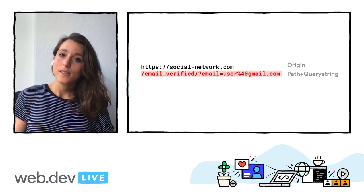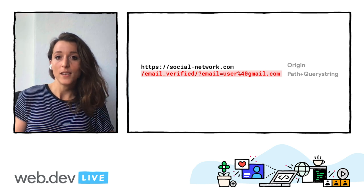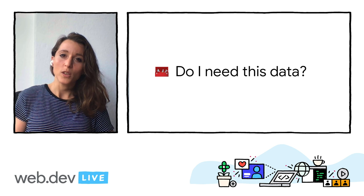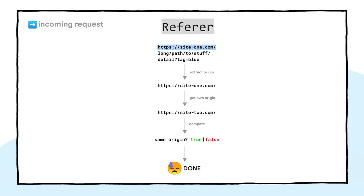And requests sent from your website might include these details. So, onto question one: do I need this data? First, incoming requests. Sometimes, like on this diagram, the referrer is used to extract the origin to see where the request came from or whether it's same origin. But the referrer contains way more data than you need to answer these questions. If you're doing this, you're using it as a proxy to find answers, and this is more work for you. Second, outgoing requests: if there's no compelling reason for your website to share full URLs cross-origin, then you shouldn't.